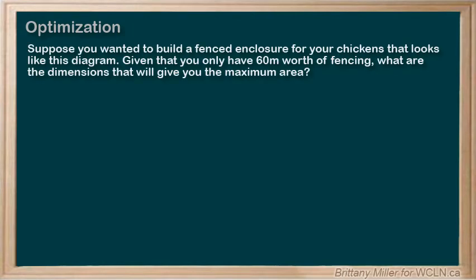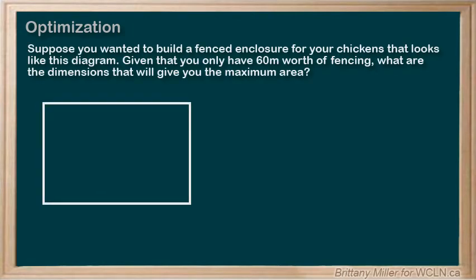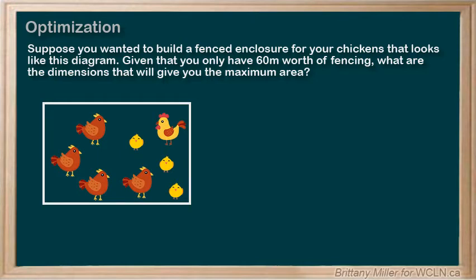Suppose you wanted to build a fenced enclosure for your chickens, but you have really dramatic chickens, and not all of them get along. So you're splitting the enclosure into two halves, like this diagram. Given that you only have enough fencing material to cover a total length of 60 meters, what are the dimensions of the pen that would give you the maximum area inside for your chickens?